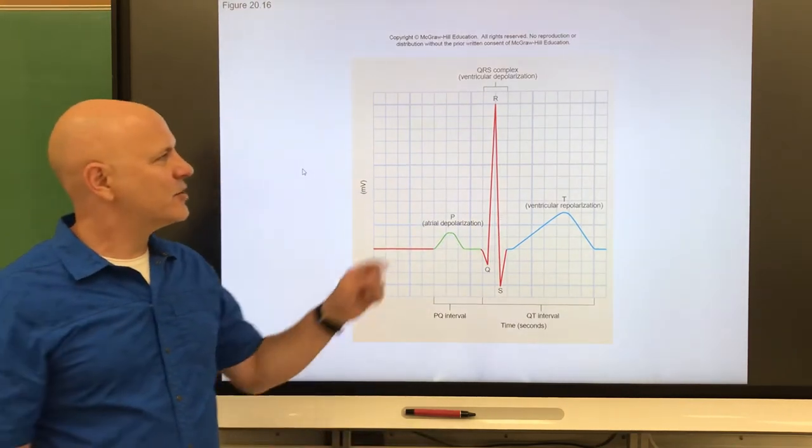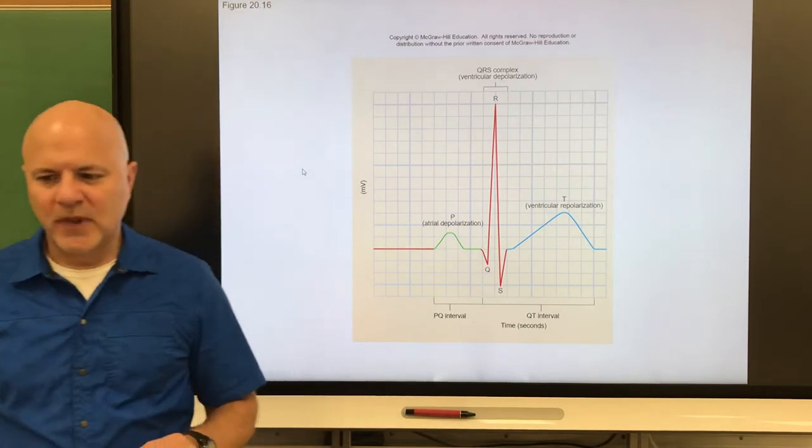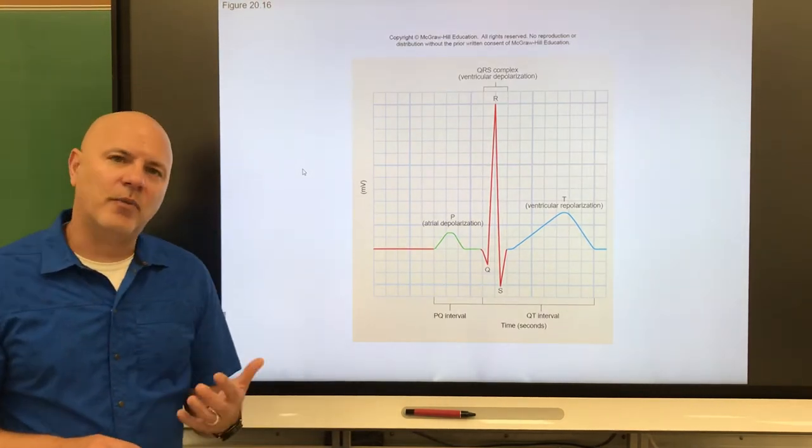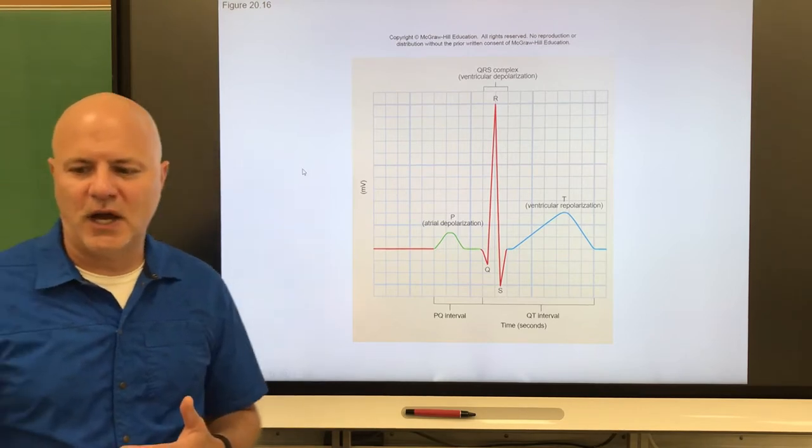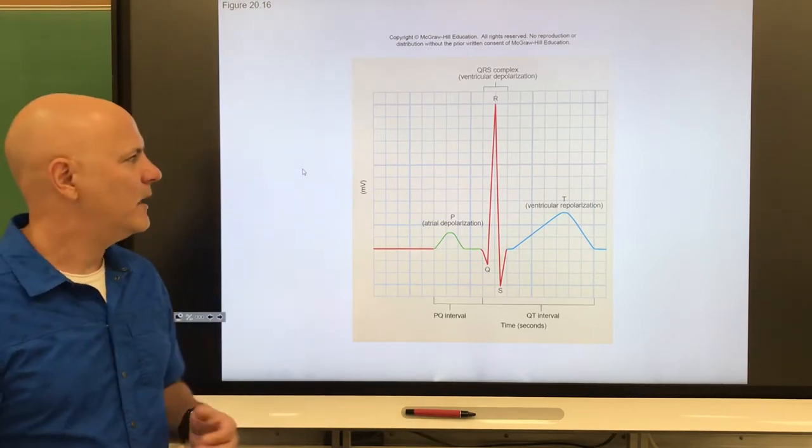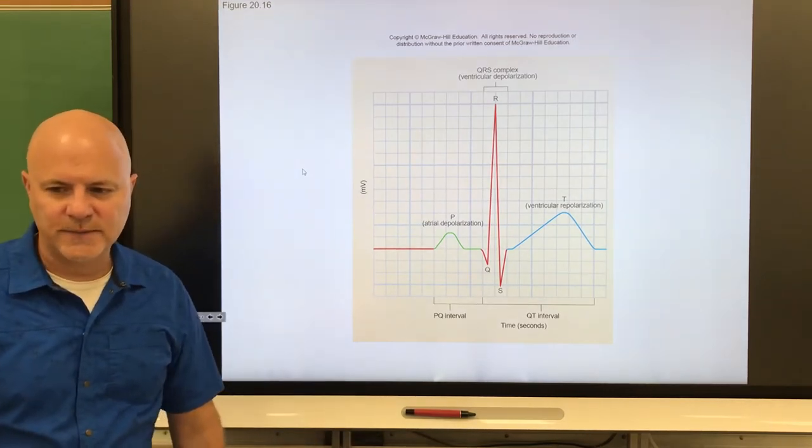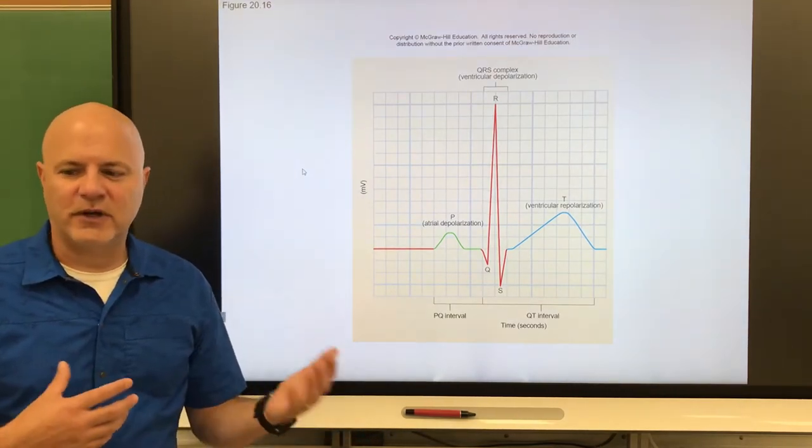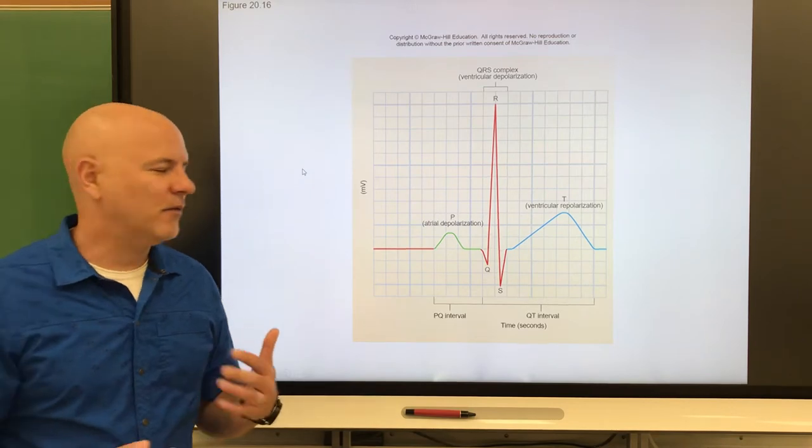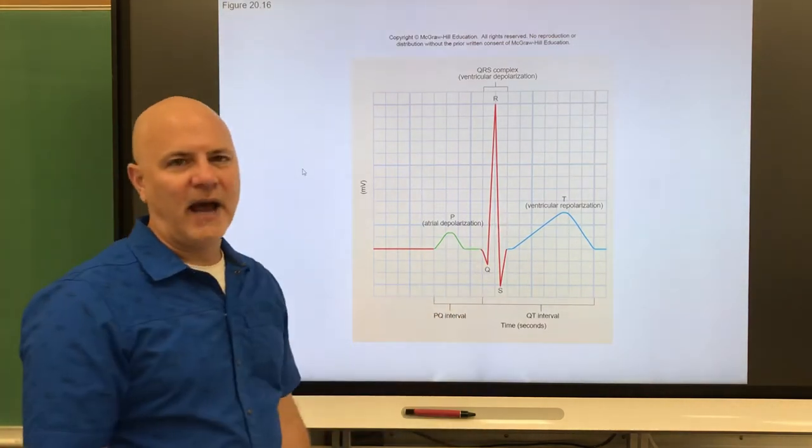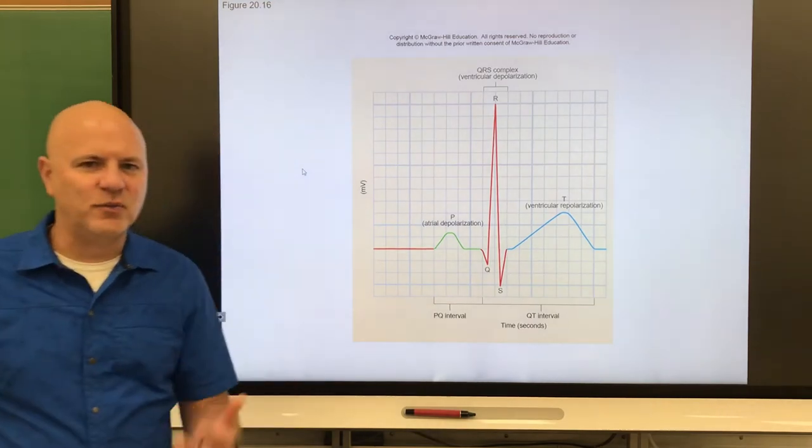Next is a QRS complex. This is caused by repolarization of the atrial walls, but more importantly, by depolarization of the ventricular walls. So this big spike there is that depolarization of the ventricular walls. This corresponds with a contraction of the ventricles and a relaxation of the atria. That's going to occur right after this wave. That wave is telling us what's happening though.